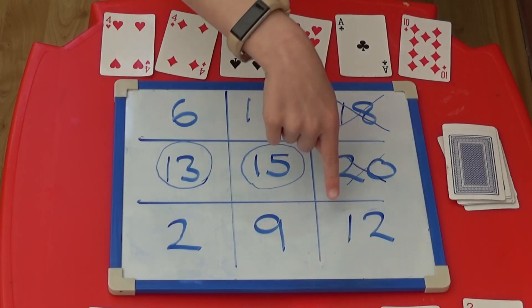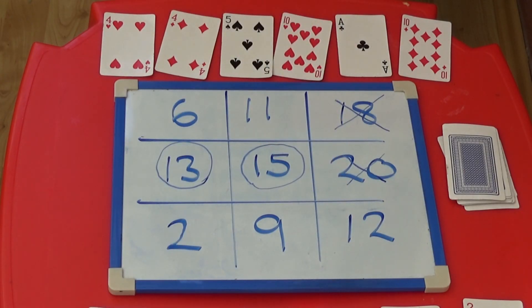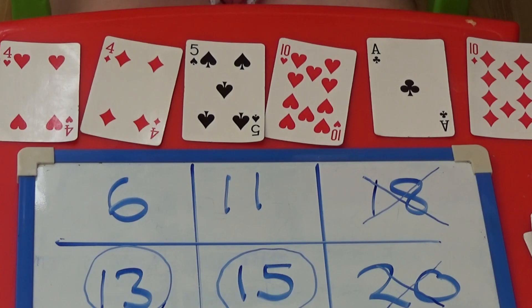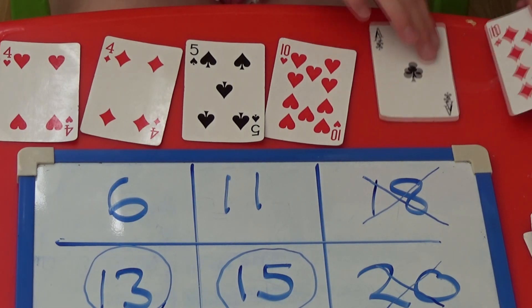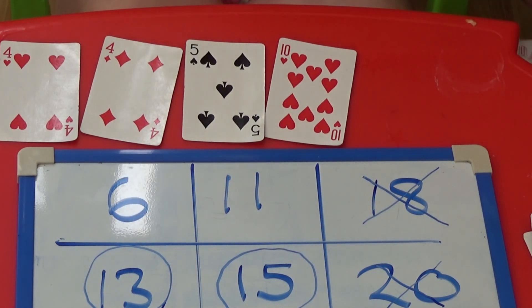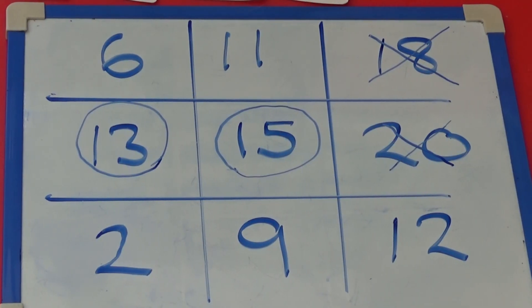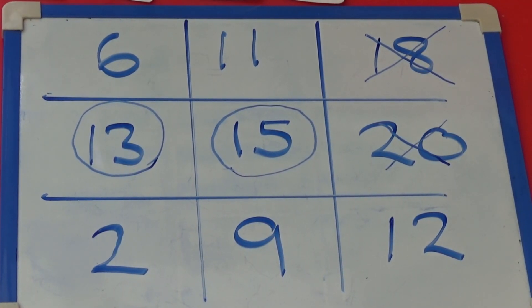I need to make 12 to block the other player but I can't see how to do that with my cards. Instead I'm going to make 11. 10 add 1 make 11. So I'm going to put a circle on 11.